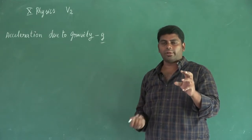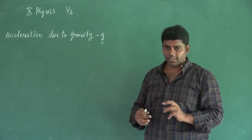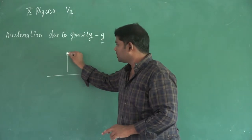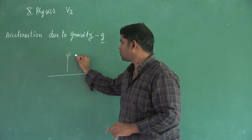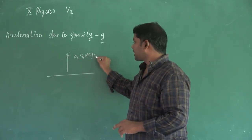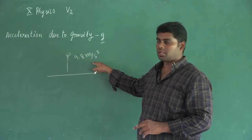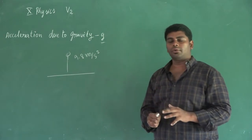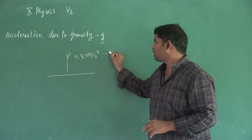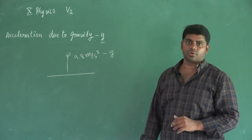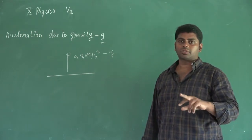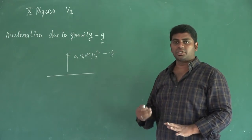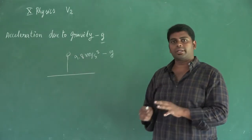If you look at g, what happens is acceleration due to gravity. Gravity acts on the ground. A force is on the ground — the earth pulls downward. The acceleration is on the ground; the value is 9.8 meters per second square. The average value is 9.8 meters per second square. So g is 9.8.